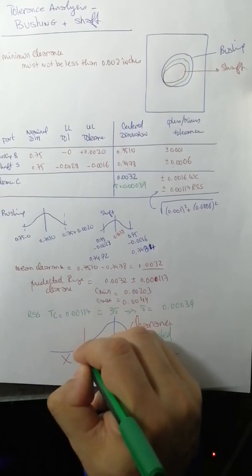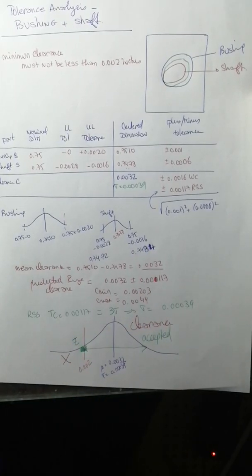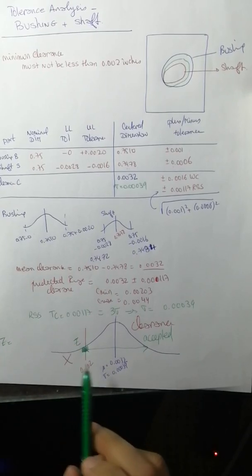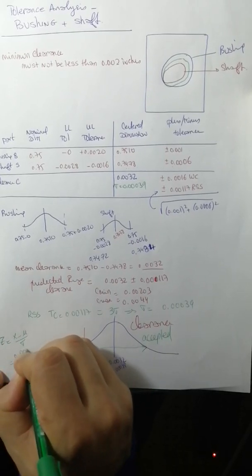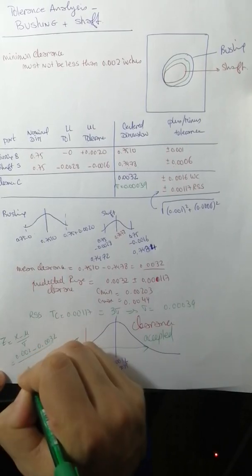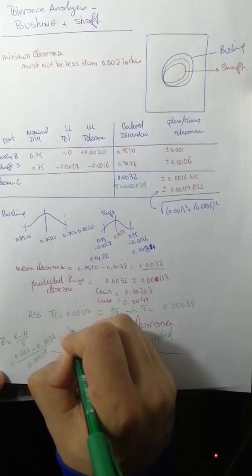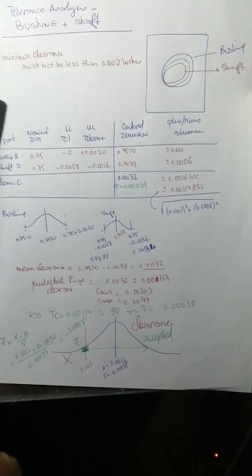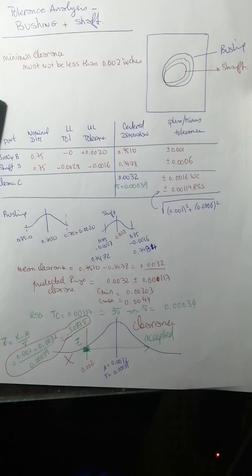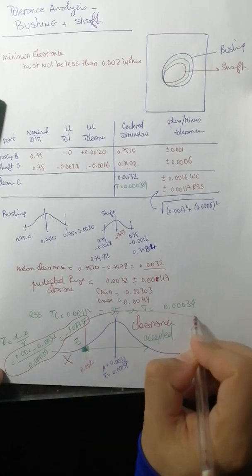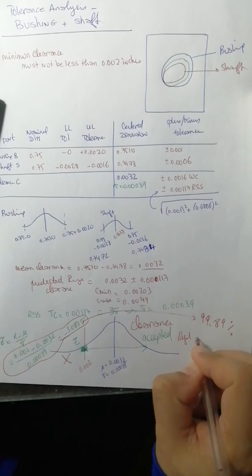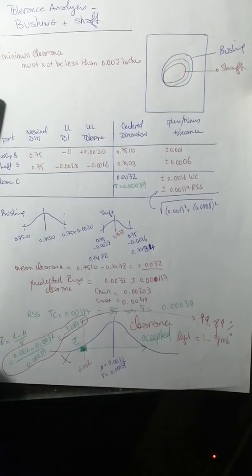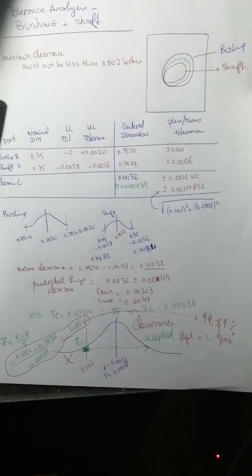We need to find the z value at this point. Z equals x minus mu divided by sigma, so 0.002 minus 0.0032 divided by 0.0039 equals minus 3.08 sigma. When you put this in the table which is available in the first lesson, we get a percentage of 99.89 percent. Those are to be accepted, and rejected is one minus this amount. When you multiply it by million, this number will come up to one thousand.